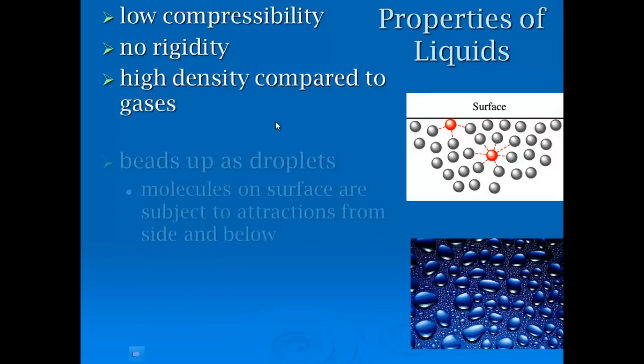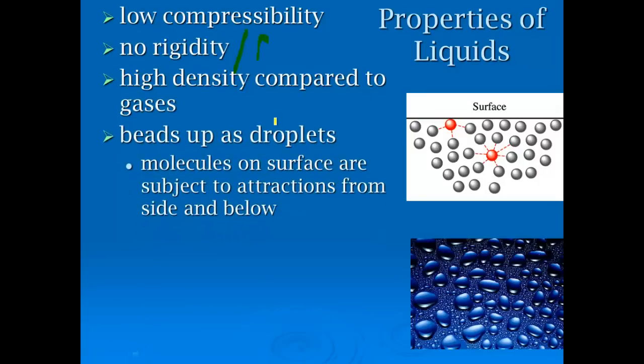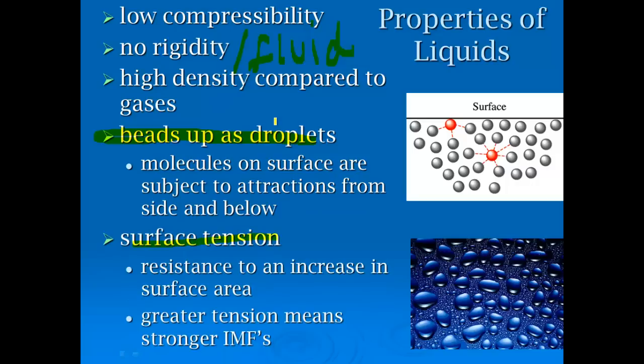Liquids, properties of liquids. They have low compressibility, no rigidity, meaning that they are fluid. They have very high density compared to gases. Huge jump between gases and liquids, small jump between liquids and solids. They will bead up as droplets. That's where we get kind of this water beads down here, and that is due to surface tension, resistance to an increase in the surface area. Greater tension means stronger IMFs, just really right on the surface. They kind of pull each other in just a little bit more and kind of tighten up and ball up around the outside.